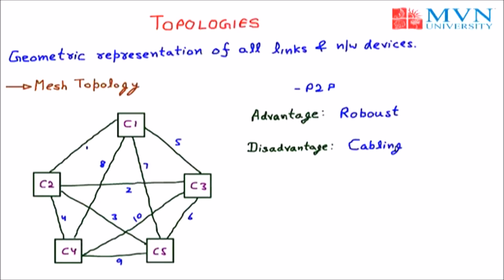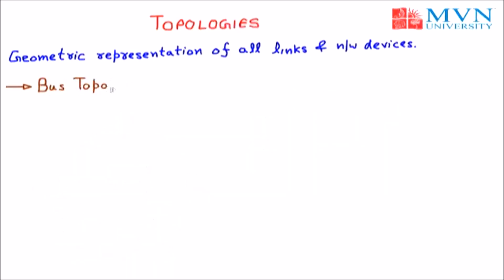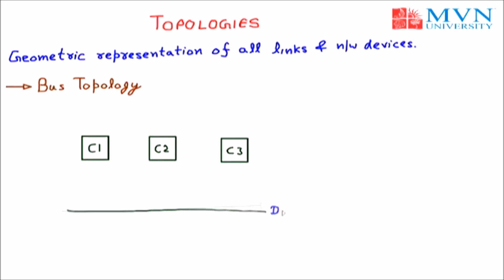The next topology is bus topology. In bus topology, various workstations are connected with a single wire, so data can be passed through a single medium. Let's take the example of three computers: C1, C2, and C3. We also have a drop line or drop wire. All computers are connected to the drop line with the help of a tap — C1, C2, and C3 are all connected to the drop line via taps.